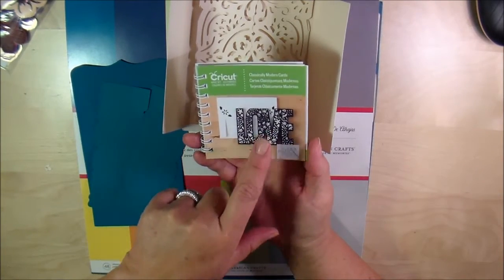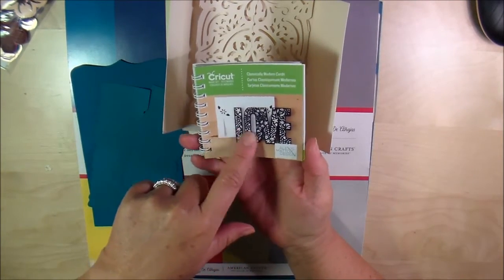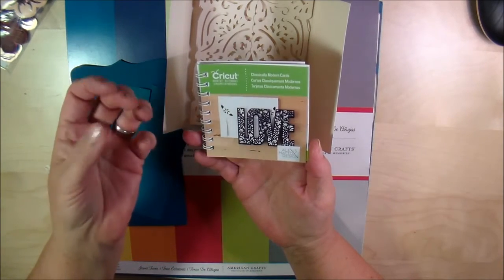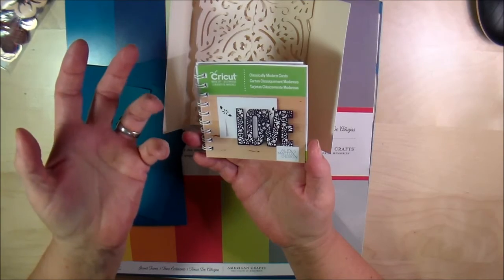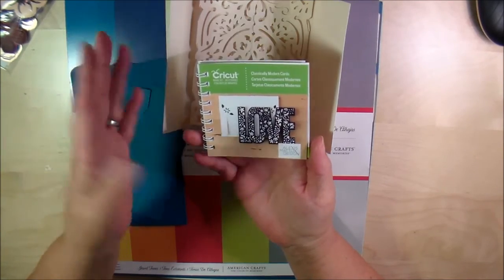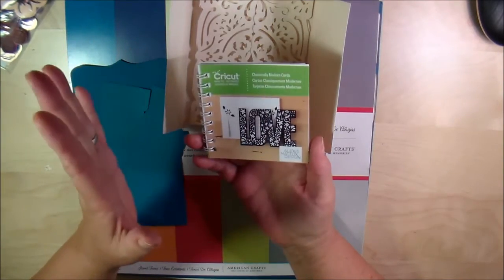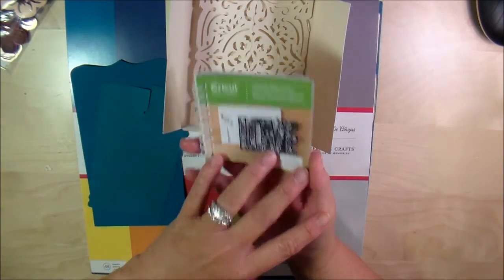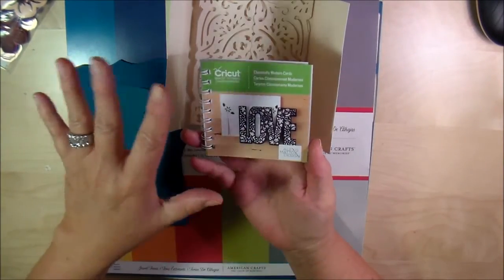Long story short, my Explorer pen assembly broke and I repaired it. For some reason my Explorer stopped working, so I got a hold of Cricut and they're shipping me a new one because it was under warranty. So I'm going to get started on this though—I don't, enough of that stuff.